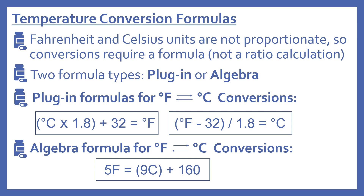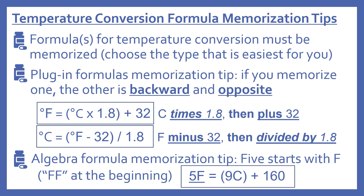The algebra formula for Fahrenheit to Celsius is a little simpler to remember as long as you know how to do the algebra. It is: 5F equals 9C plus 160. These formulas can be a little difficult to remember, so I have some memorization tips depending on which ones you choose to memorize.